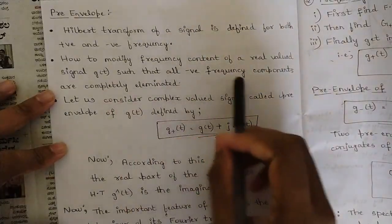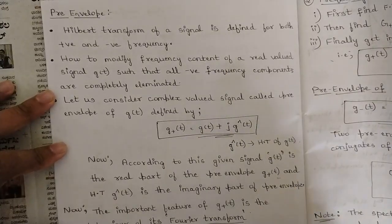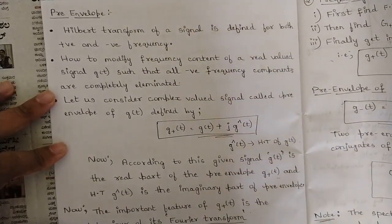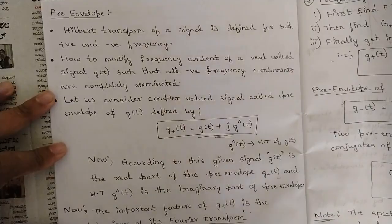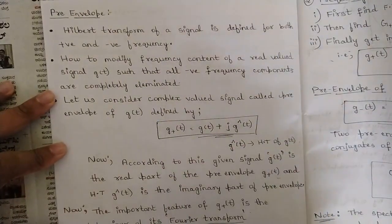To eliminate frequency components, there is one circuit — one term. If you try to recall it, that term is called the envelope detector, which we have studied in principles of communication systems. Please try to recall it because all these things are interconnected. Digital communication and principles of communication systems are the basics required for this subject. That envelope detector circuit is required to remove all the negative frequency components of a real-valued signal in order to make it a stable signal.